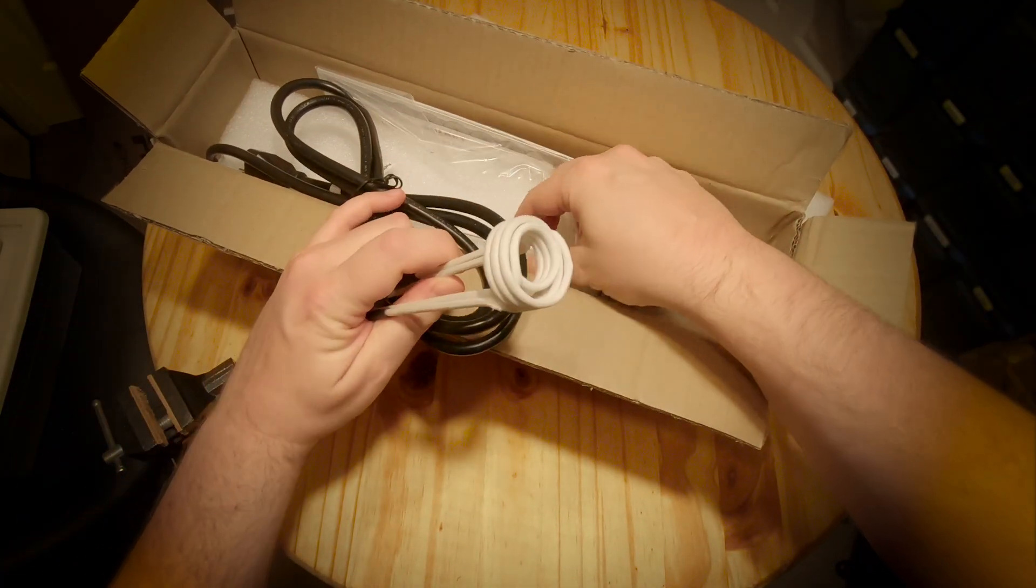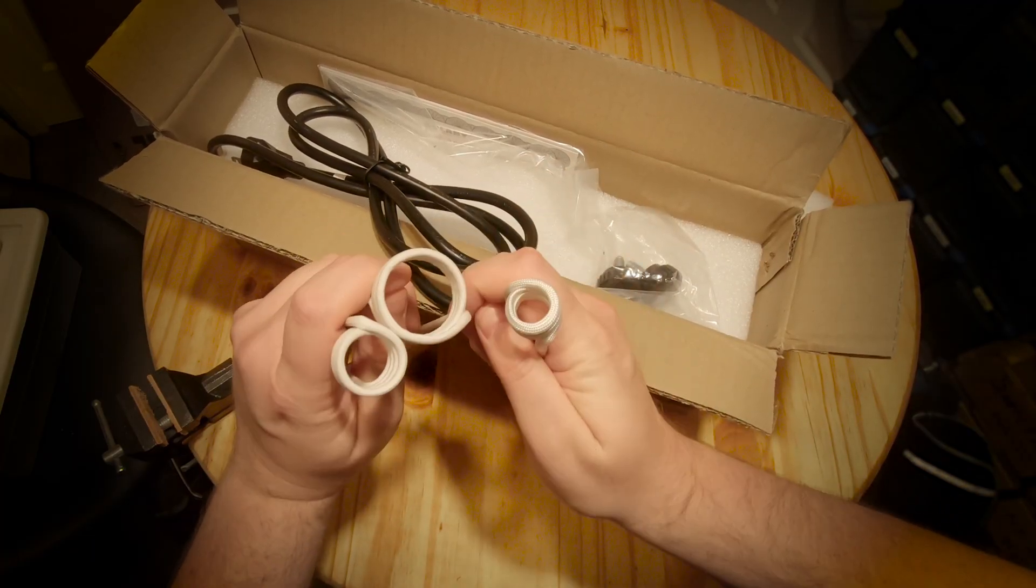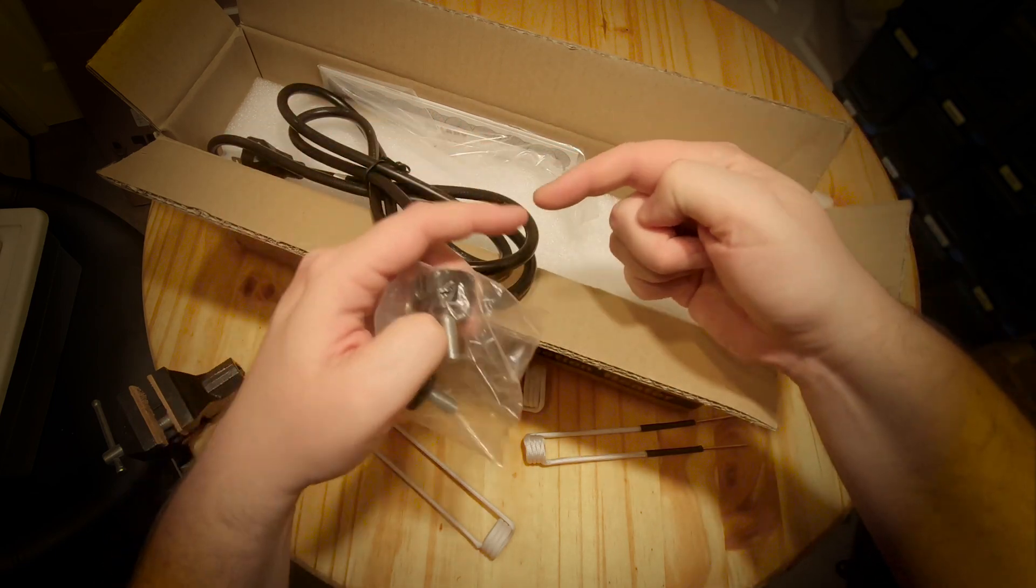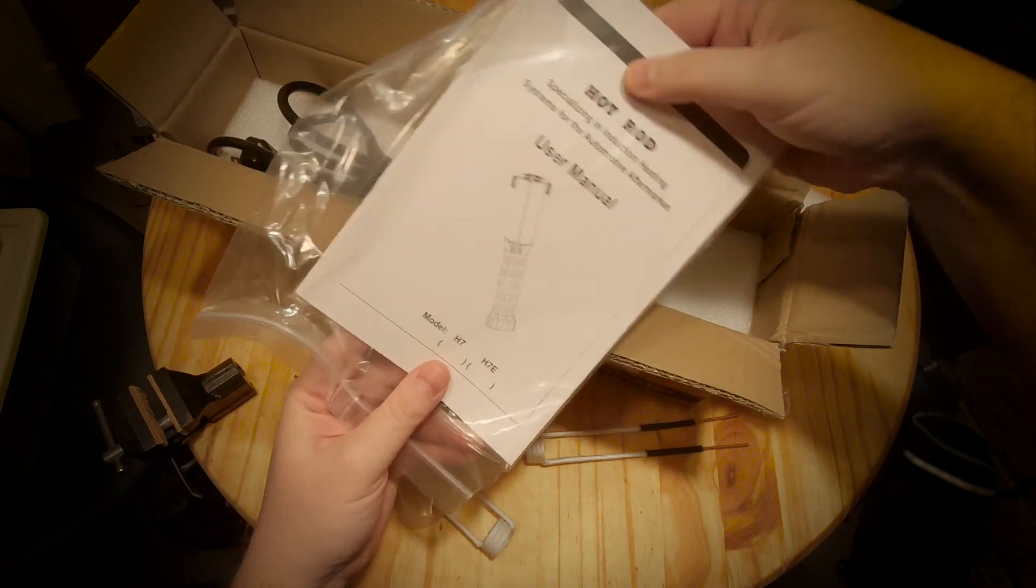Here's the actual coils for the induction heater. They give you three different sizes, that's nice. These are the little Frankenstein bolts that attach the coils to the doohickey. Got a warranty of some sort and user manual.